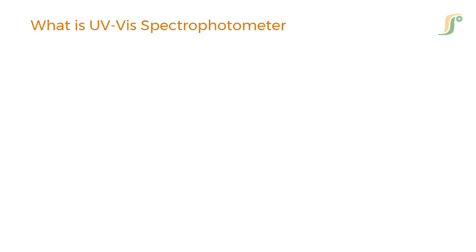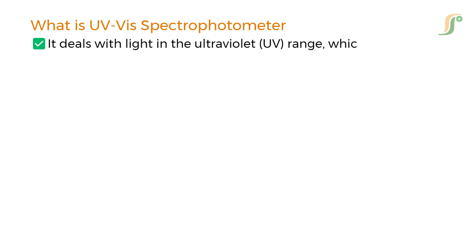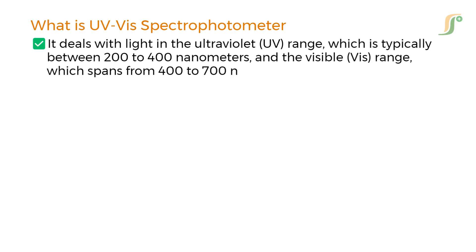Let's start with the basics. What exactly is UV-visible spectrophotometry? UV-visible spectrophotometry is an analytical technique used to measure how much light a chemical substance absorbs. Specifically, it deals with light in the ultraviolet range, which is typically between 200 to 400 nanometers, and the visible range, which spans from 400 to 700 nanometers.